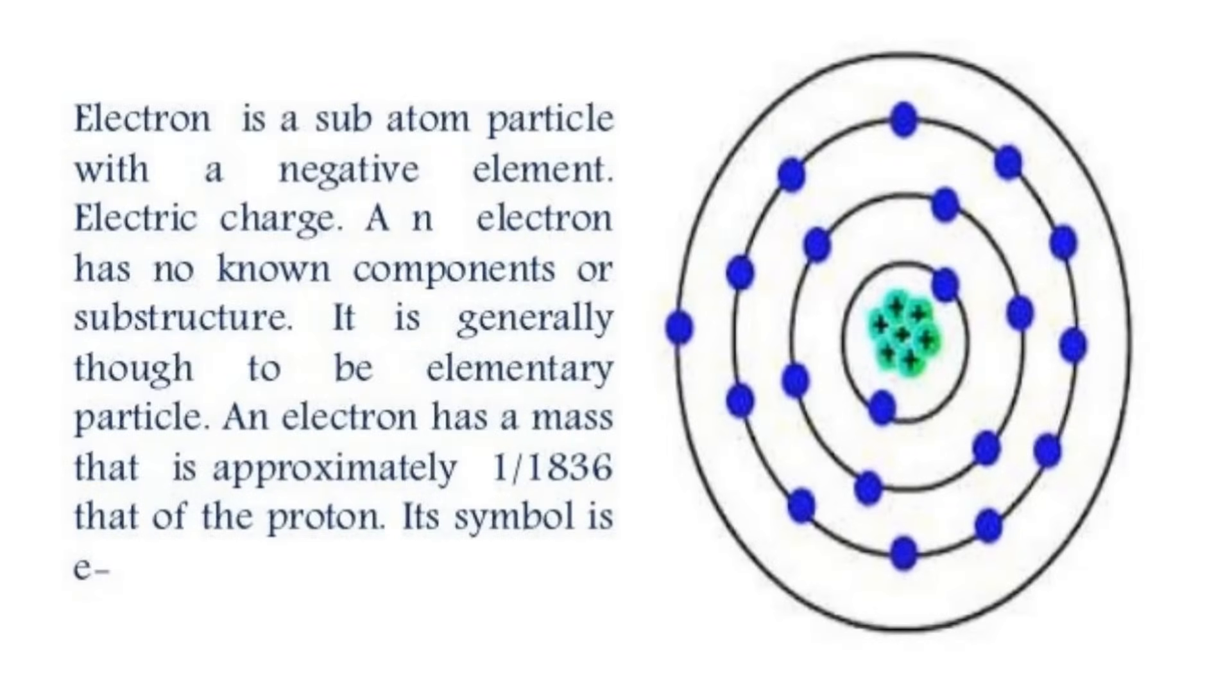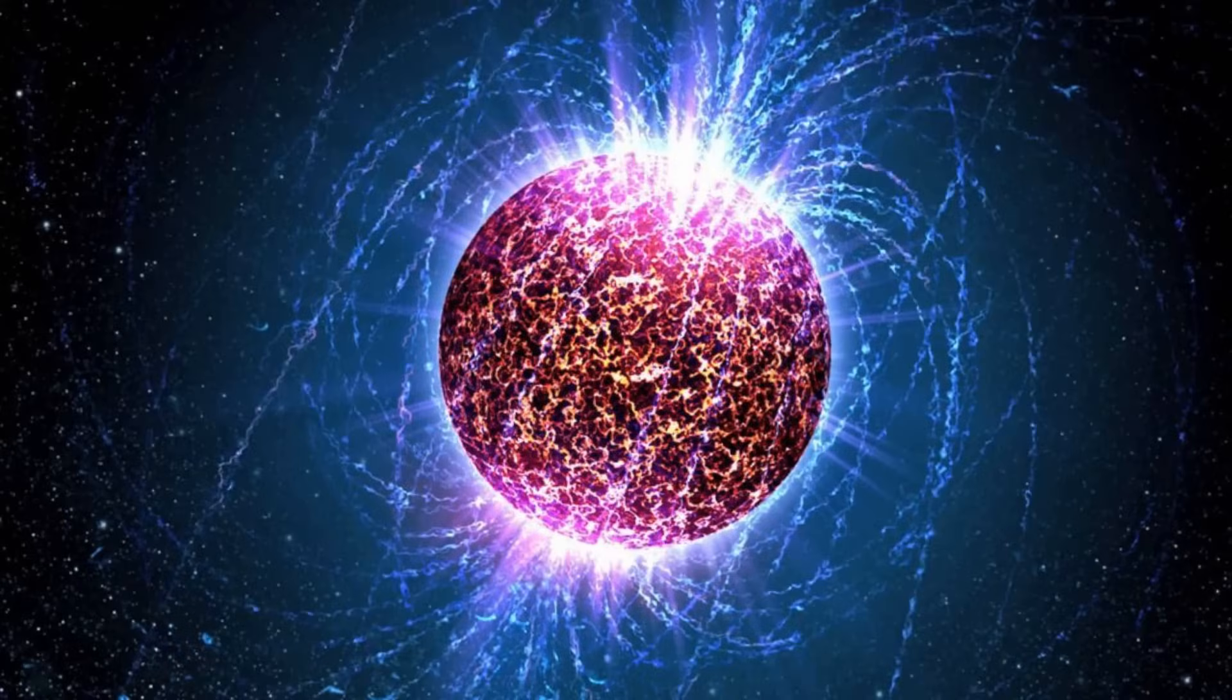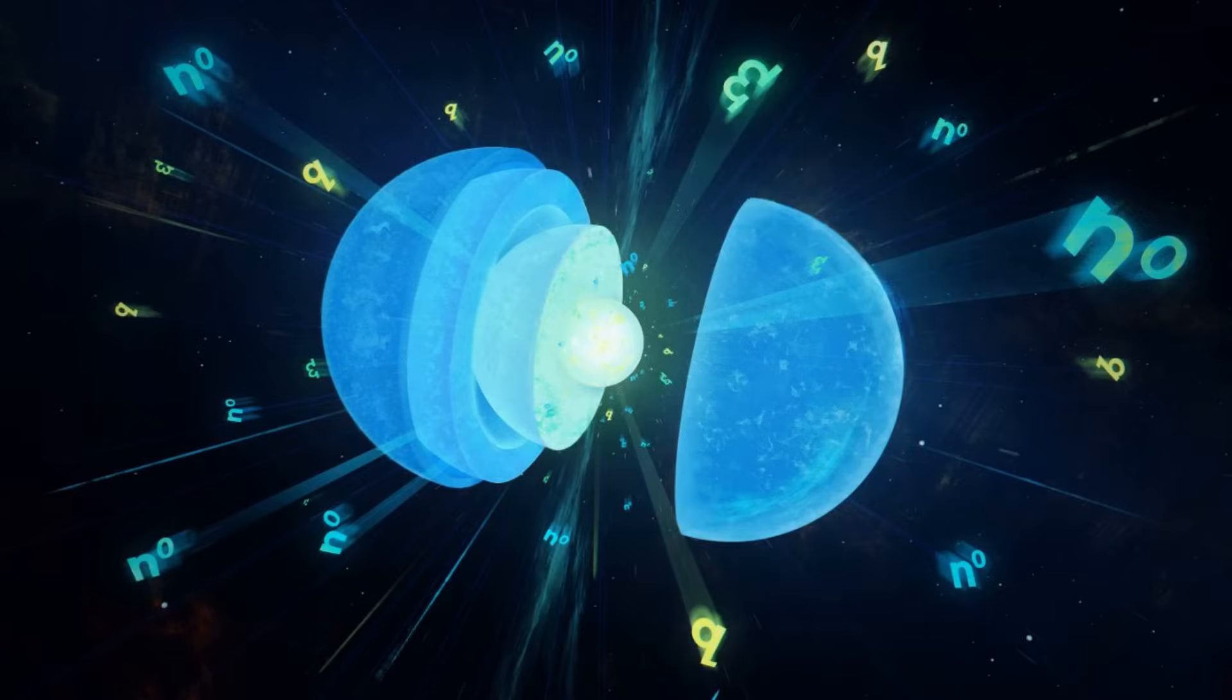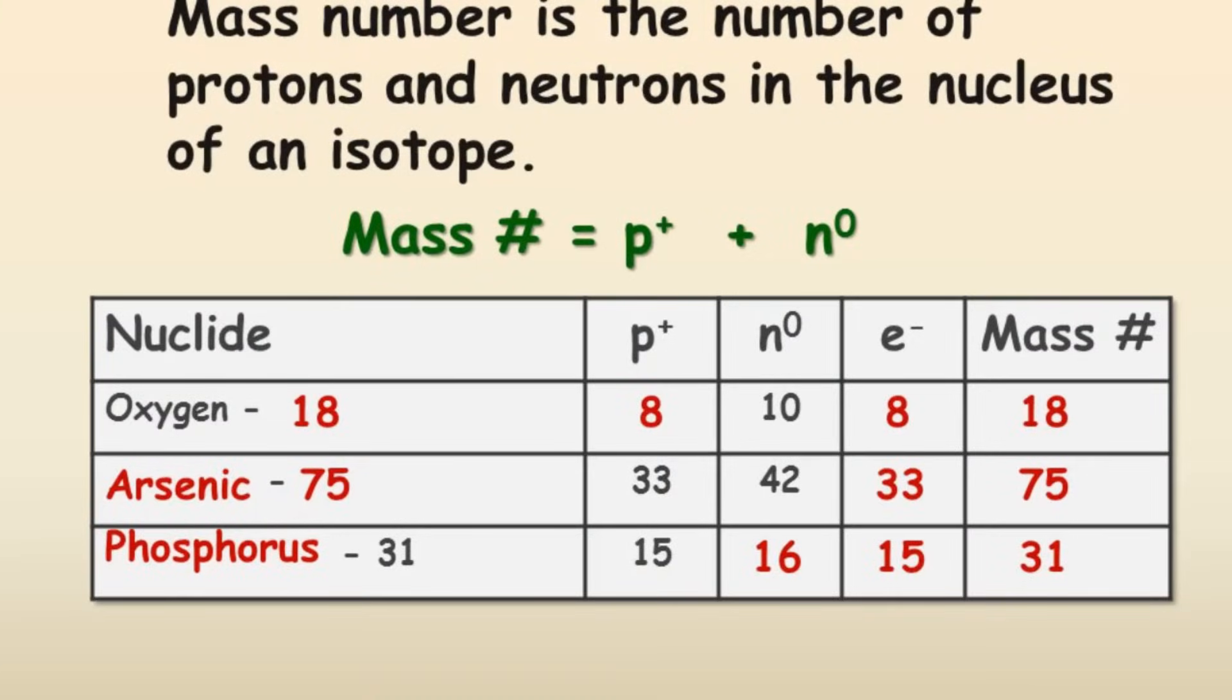Protons are about 1,836 times heavier than electrons, and neutrons are about 1,838 times heavier than electrons. The energy balance in the decay of a neutron is achieved by the anti-neutrino, a neutral particle that carries off surplus energy as the neutron decays.